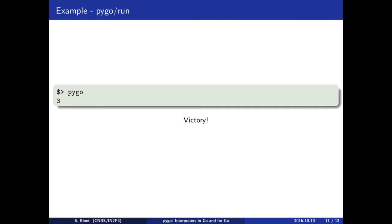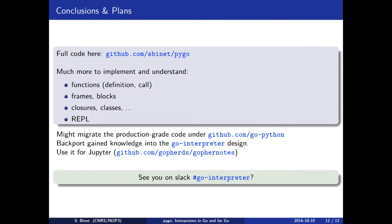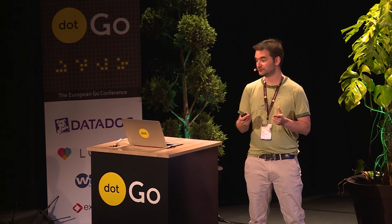All of the opcodes have to be decoded in turn, and then depending on the opcode value, you do your thing. When you compile and run this, you get three — which is what you wanted. Victory! The full code is under my sbinet GitHub account, and there are many more things to implement and understand, such as defining functions, calling them, and actually implementing the REPL. At some point, maybe that code will be migrated into GoPython and used by Jupyter to have a Go kernel for Jupyter, and backfeed all of that information to the Go interpreter design. If you have any input, meet us on the Go Interpreter Slack channel. Thank you.